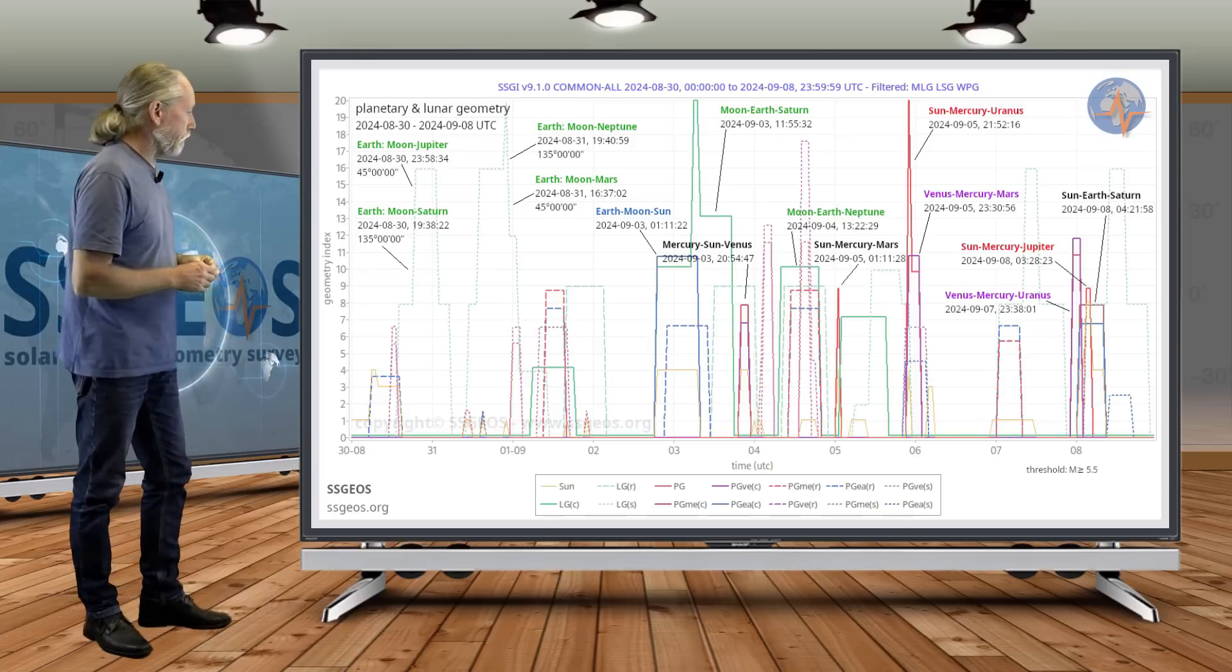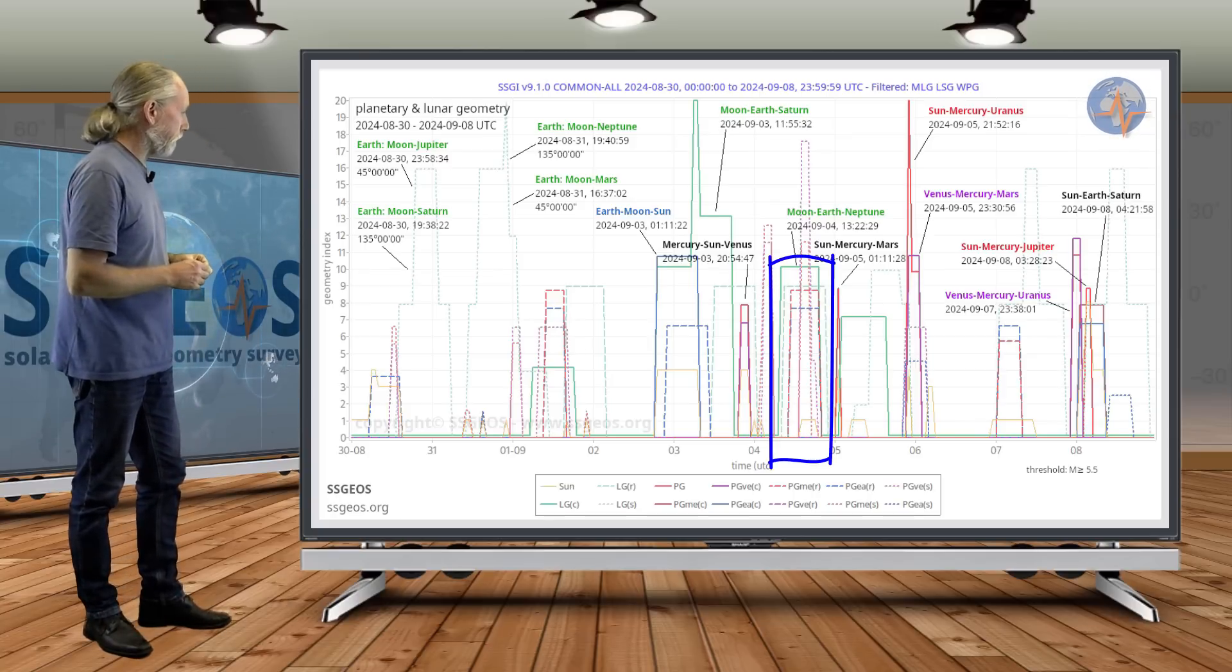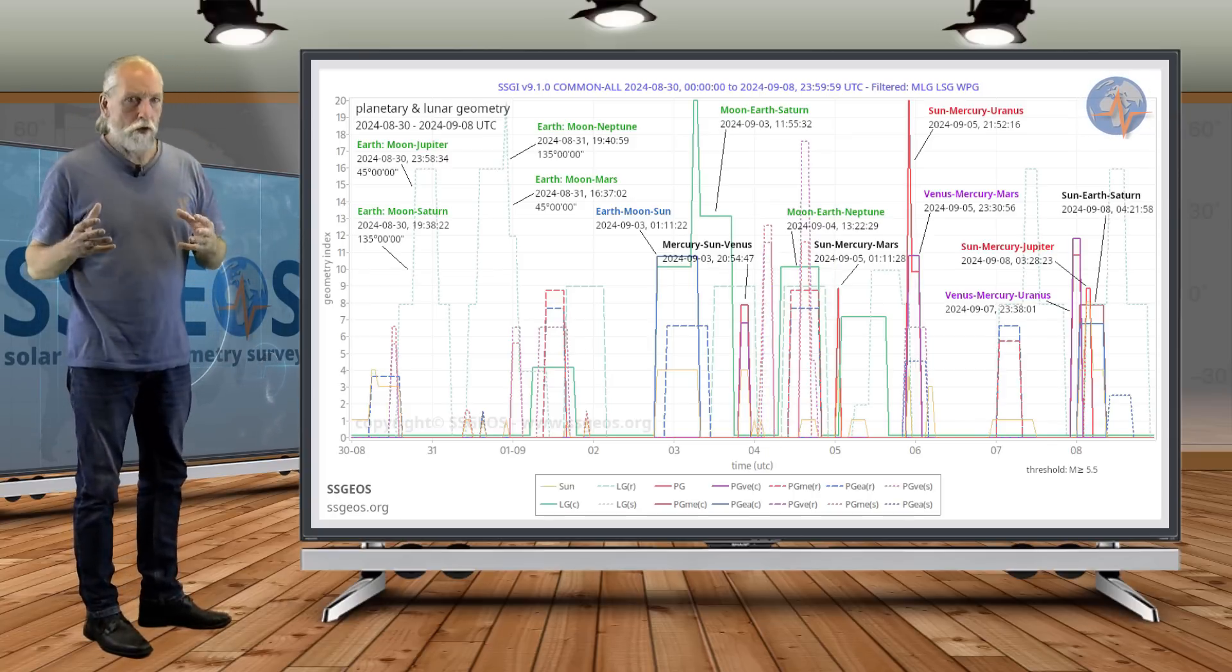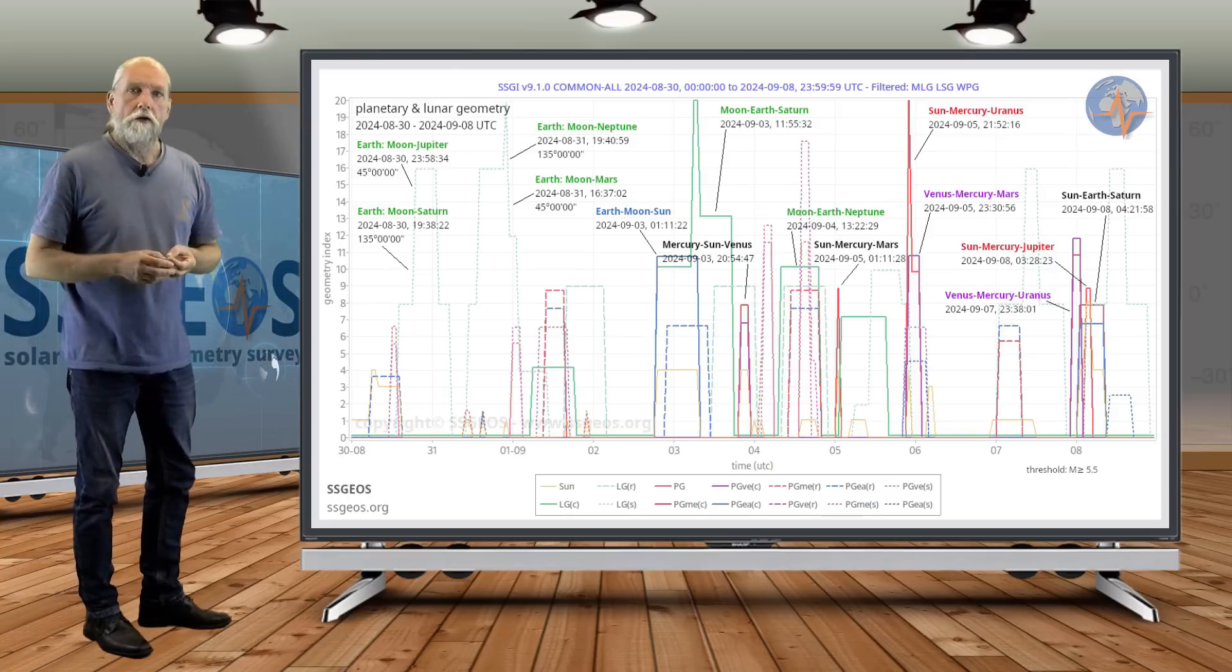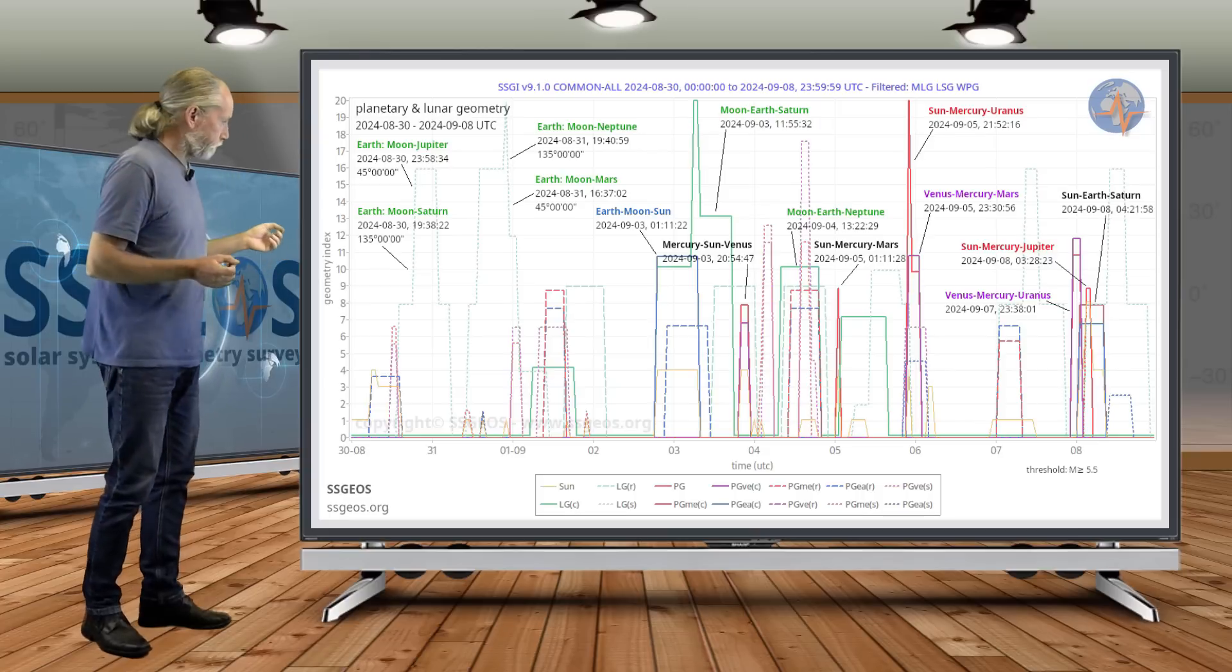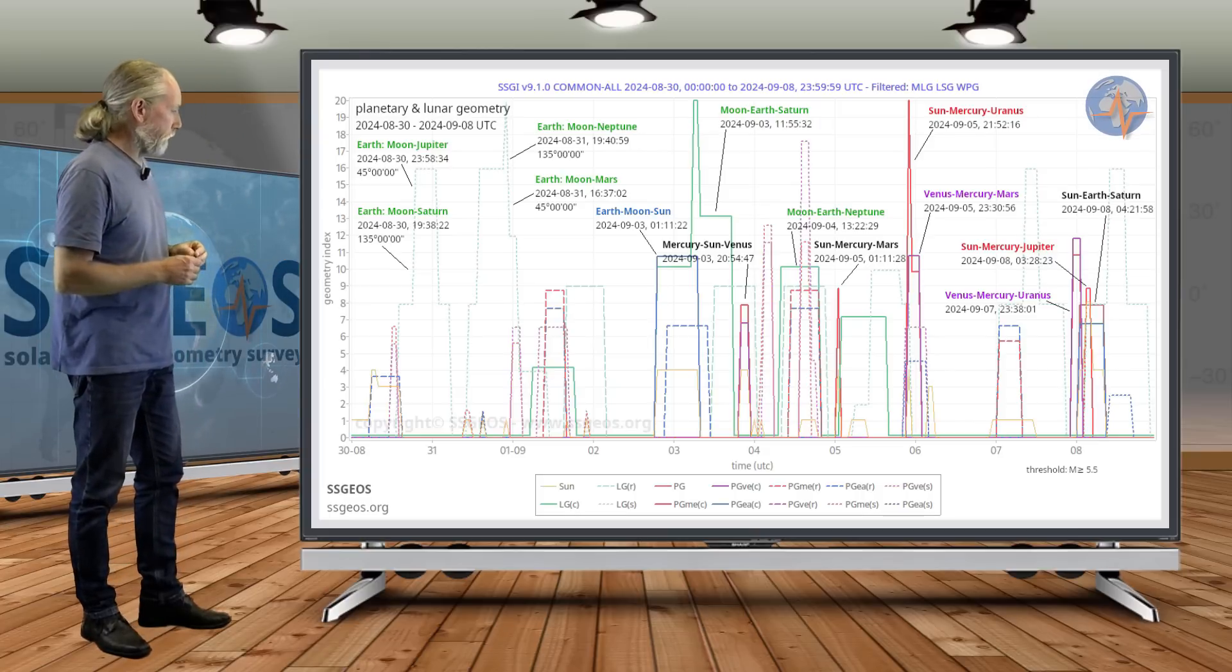And we also have lunar geometry of the Moon, Earth, and Neptune on the 4th, coinciding with some critical planetary geometry. There's a semi-right angle geometry of Mercury, Venus, and Neptune, and there could be an obvious seismic response there.